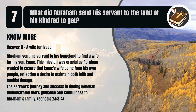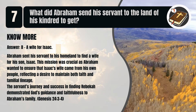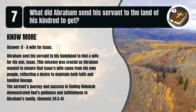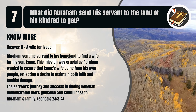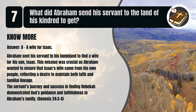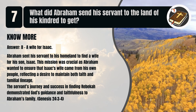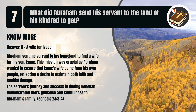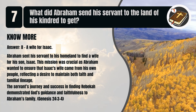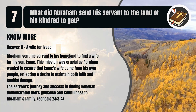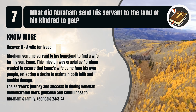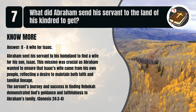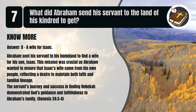That's B. A wife for Isaac. Abraham sent his servant to his homeland to find a wife for his son Isaac. This mission was crucial as Abraham wanted to ensure that Isaac's wife came from his own people, reflecting a desire to maintain both faith and familial lineage. The servant's journey and success in finding Rebekah demonstrated God's guidance and faithfulness to Abraham's family. Genesis chapter 24 verses 3 to 4.